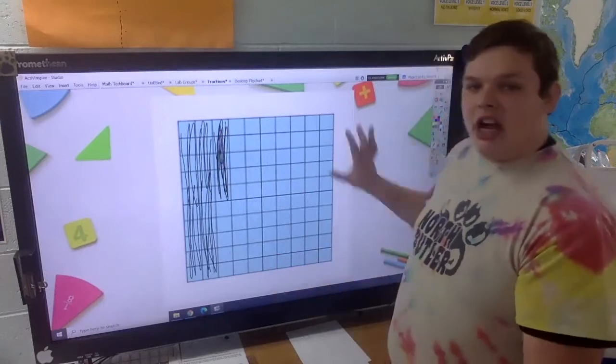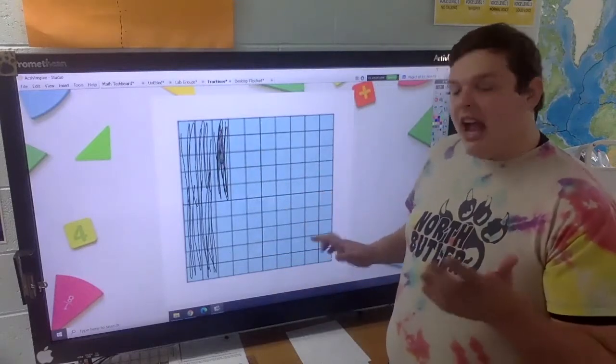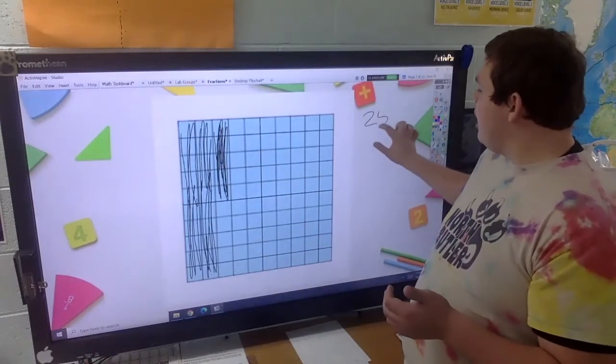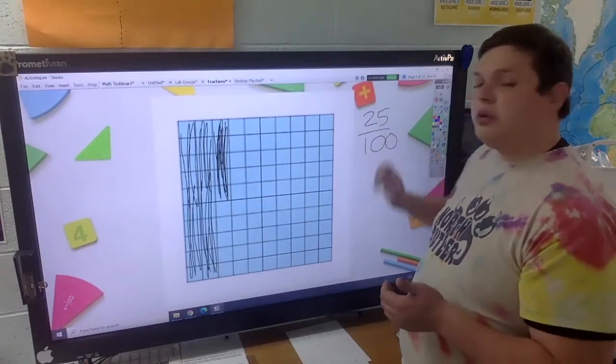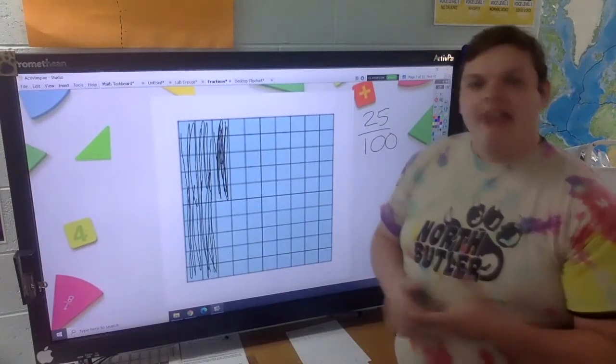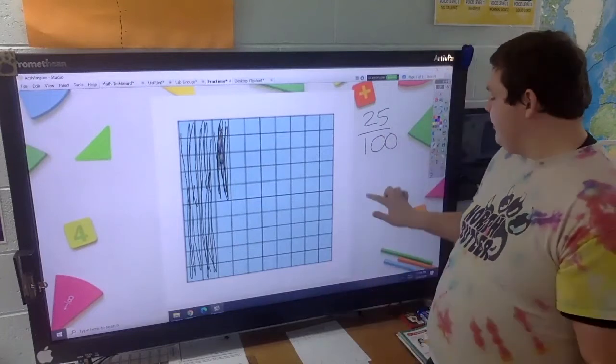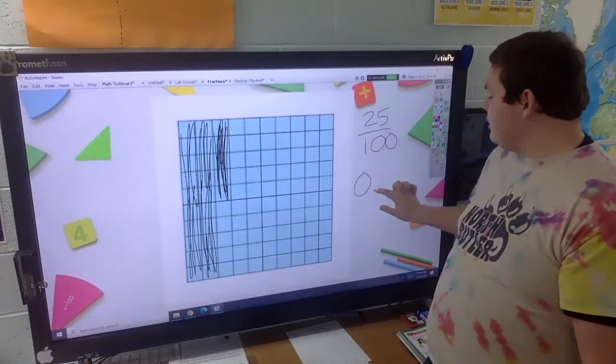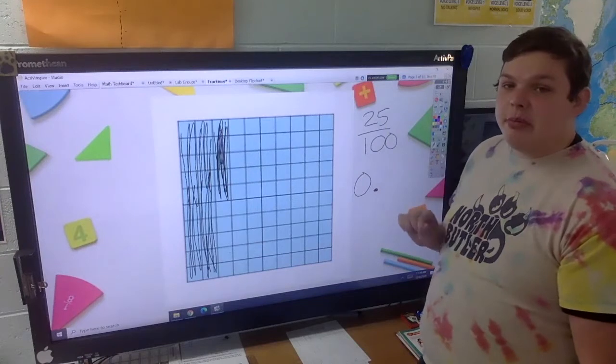We still have 100 pieces here. So our fraction would be 25 out of 100 or 25 hundredths. Let's look at that in decimal form. We have zero wholes.